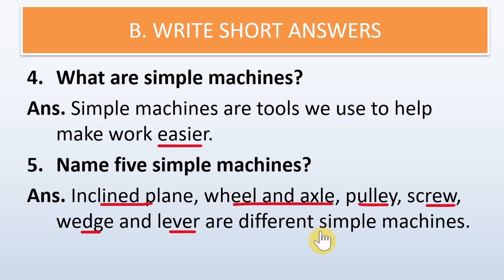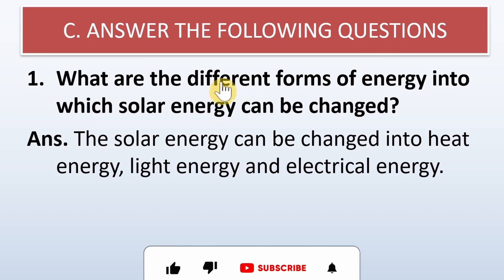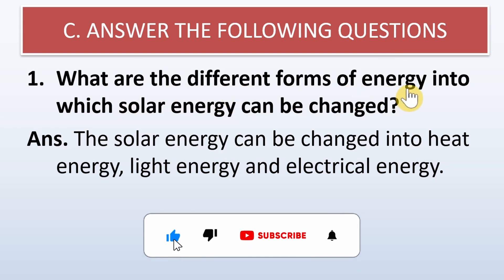Name five different simple machines: inclined plane, wheel and axle, pulley, screw, wedge, and lever. These are the five different simple machines.